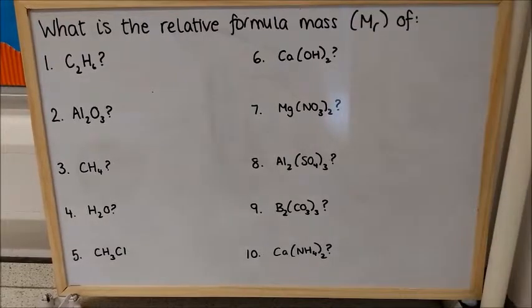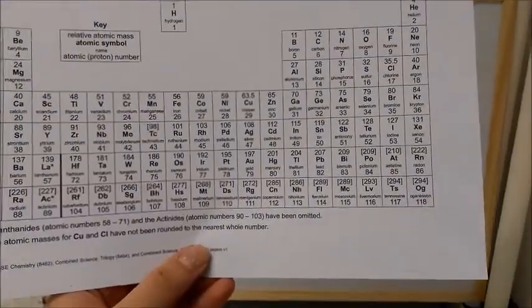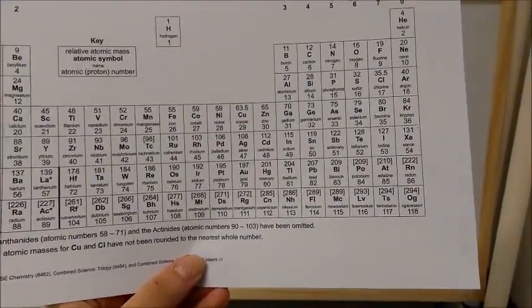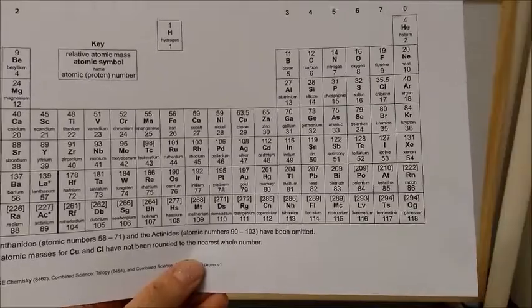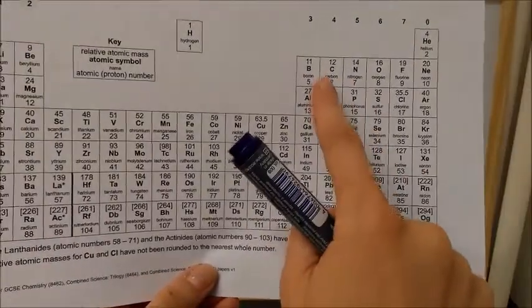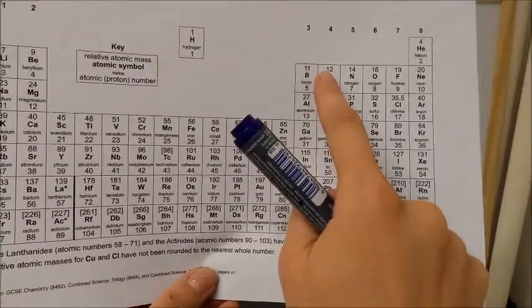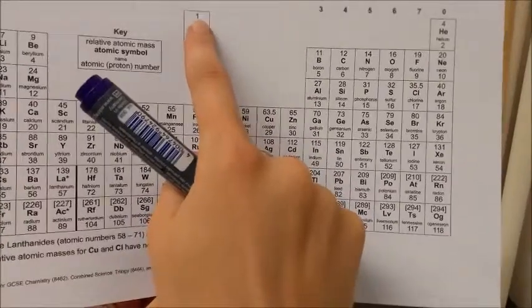So I have 10 questions here, and for each question, the very first thing I'm going to need to do is to find out the relative atomic mass of the different elements that are in the compound. So for the first one, I need carbon, which I can see as 12, and hydrogen, which I can see as 1.